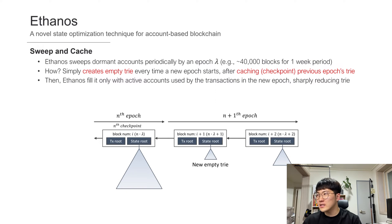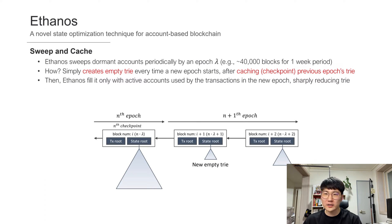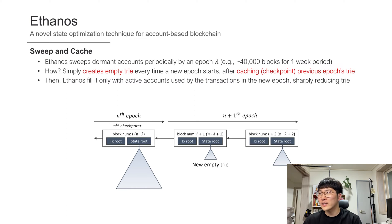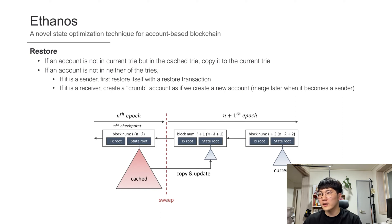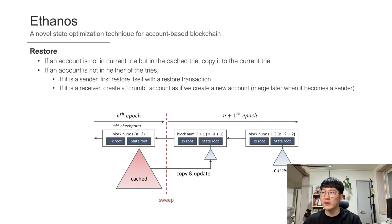Since it is extremely expensive to traverse the state trie to find and remove dormant accounts, Ethanos simply creates a new empty trie every time a new epoch starts, and fuses it with the active accounts used by transactions in the new epoch, and also the miners. Since the trie is initially empty, no account is available, so Ethanos caches the state trie of the checkpoint as well and accesses the cache trie to find the state of an account not in the current block. If an account is in the cache trie but not the current trie, copy it to the current trie. However, if an account is in neither the current trie nor the cache trie, it must first be reactivated.